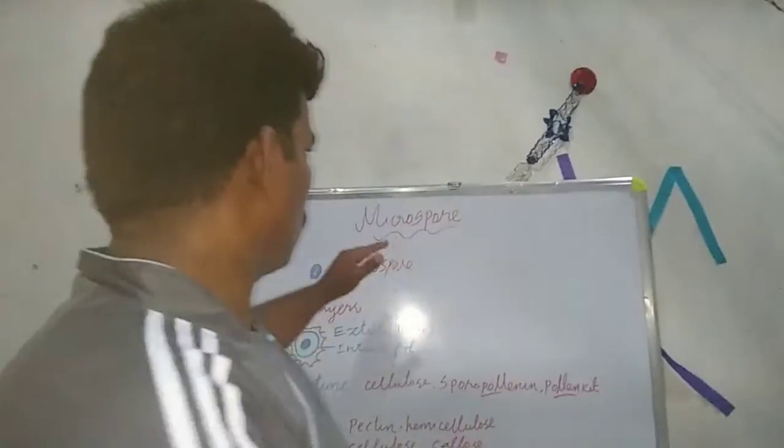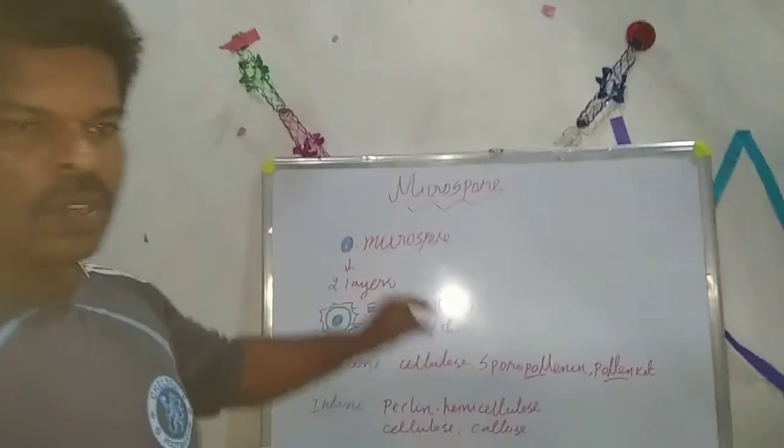Hi guys, today we will discuss one of the five more questions for the NEET-oriented exam because there are many questions from the microspore. Microspore is one of the areas for the pollen grain, male gametophyte. Five more questions on the development of the microspore.